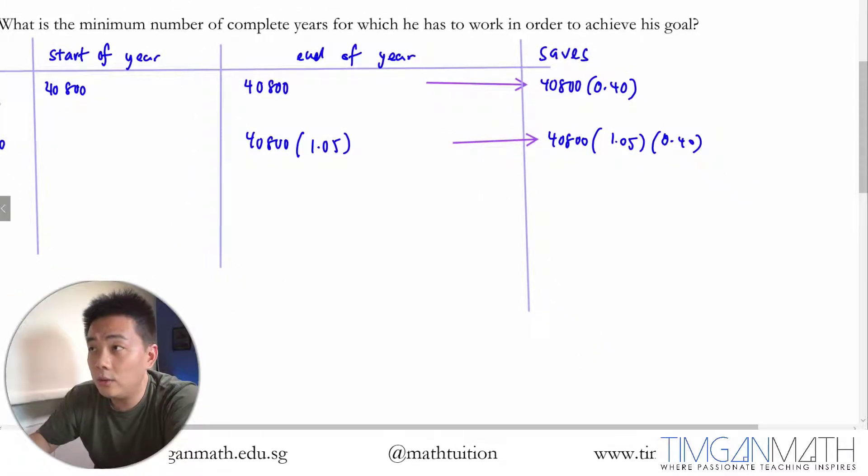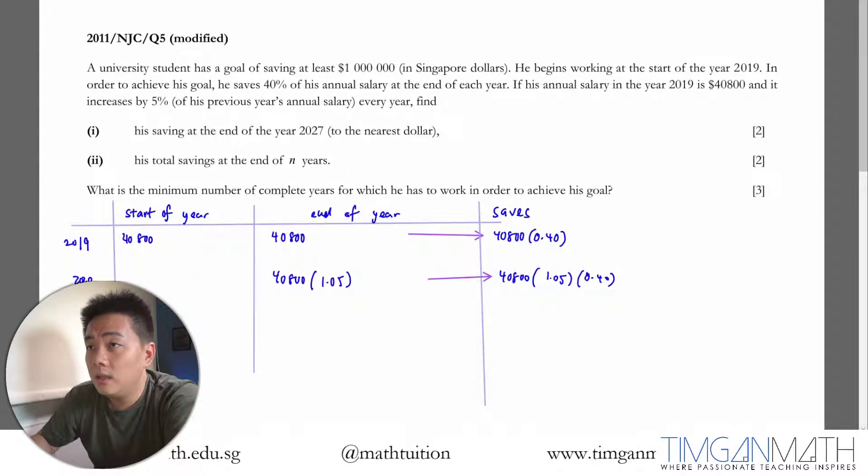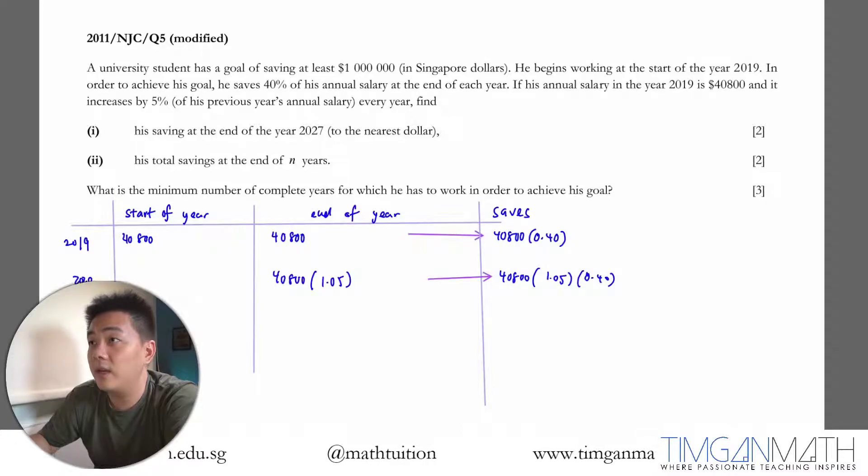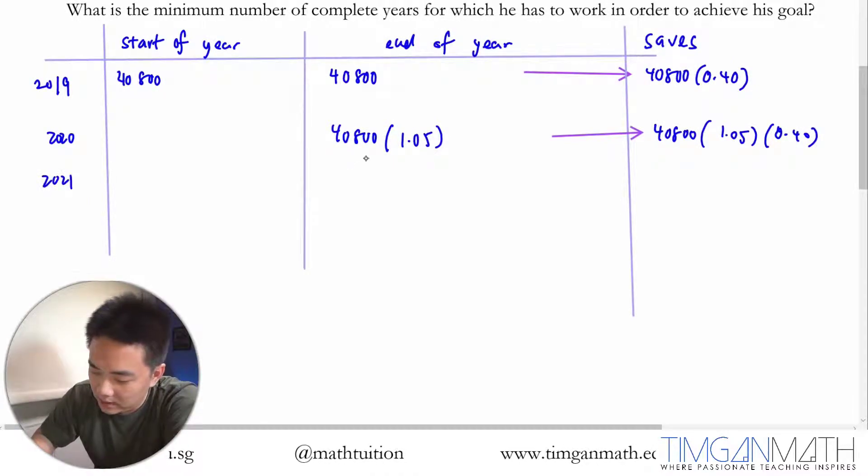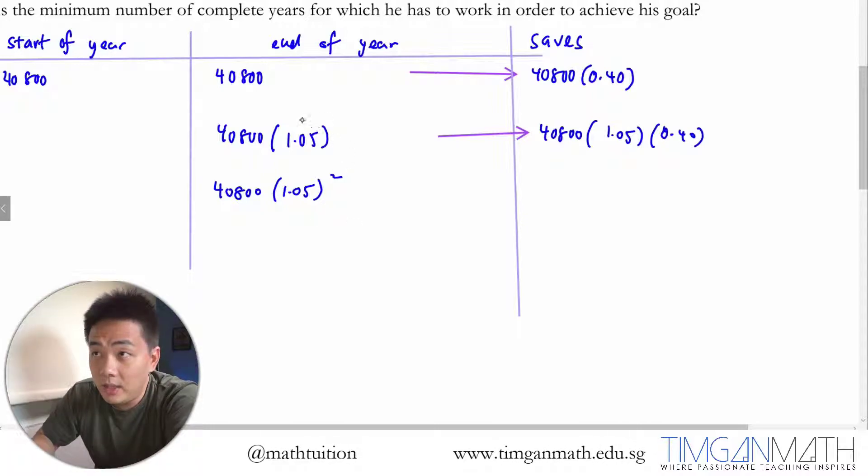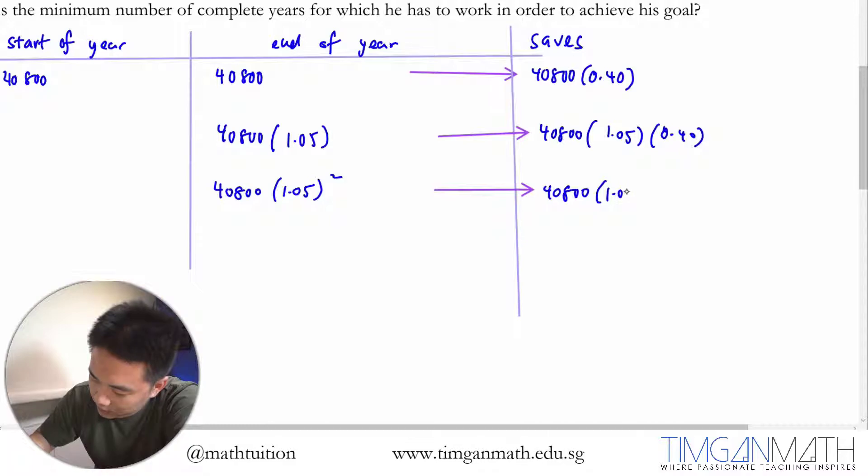Subsequently what happens is the next year, 2020, it will be $40,800 increased by 5%, so we multiply by 1.05. And then this year, you will just save $40,800 times 1.05 times 0.40. Do not use calculator, just leave it in factorized form so it's easier. Then the third year, this is his amount that he saves. Every year he has an increment of 5%, so you just multiply 1.05. After that, you just multiply 40%. So this is what he saves: $40,800 times 1.05 squared times 0.40.